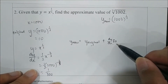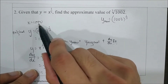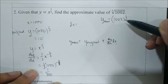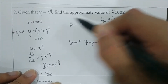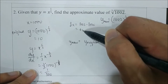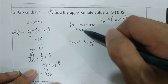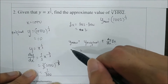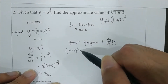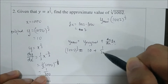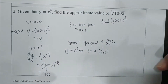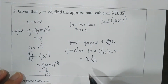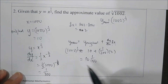Sigma x represents the changes in x. Since x changes from 1000 to 1002, sigma x equals the new value minus the old value, which is 2. Substituting all values gives the new y. You can use a calculator to check the answer, which will be approximately the same.